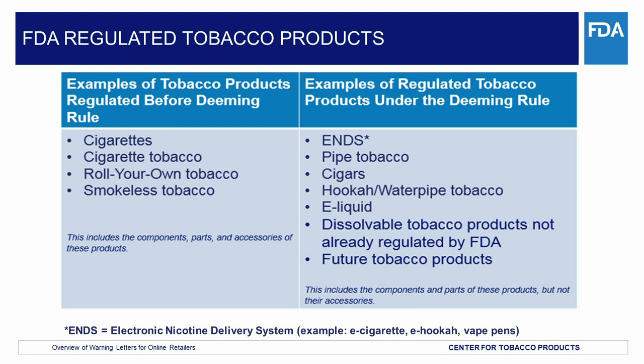For more information about those requirements for the currently regulated tobacco products, we encourage you to visit our website, www.fda.gov/tobaccoproducts. As of the effective date of the deeming rule, FDA now regulates any other tobacco products that meet the definition of tobacco product under the FD&C Act, including the components and parts of those tobacco products, but excluding accessories of newly regulated tobacco products. Some examples of newly deemed tobacco products include electronic nicotine delivery systems, or ENDS, including e-cigarettes, e-cigars, vape pens, cigars, pipe tobacco, nicotine gels, water pipe or hookah, dissolvables not already under FDA's authority, and future tobacco products.